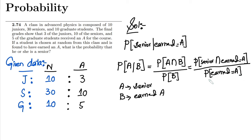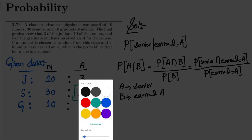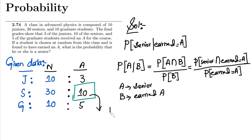Divided by the probability that a student has earned an A. Do we know the probability that a student is senior and has also earned an A? Yes, that is given here — 10 students who are senior and attained grade A, divided by the total number of students, which is 50.